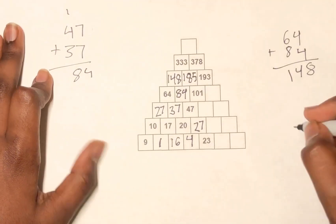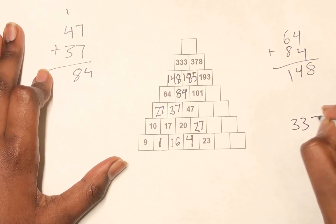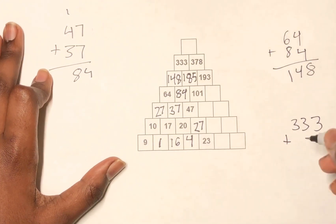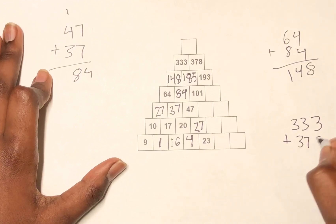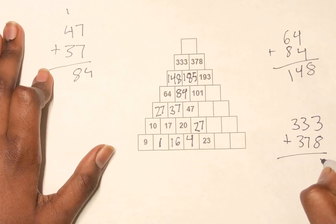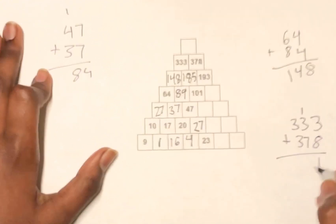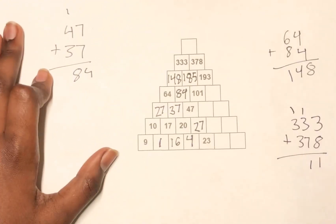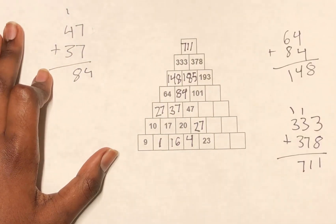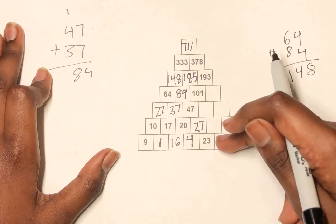And then 333 plus 378 equals 711. So now we have to solve these numbers.